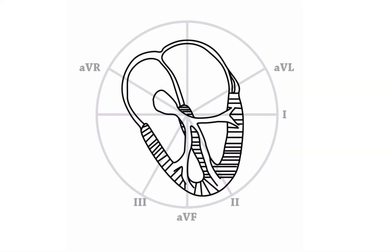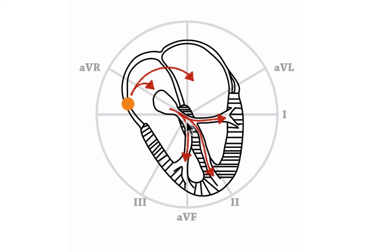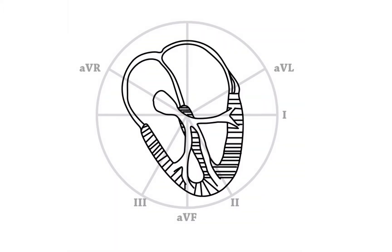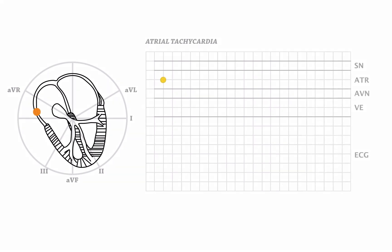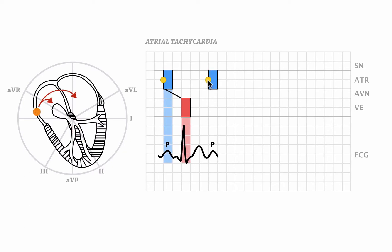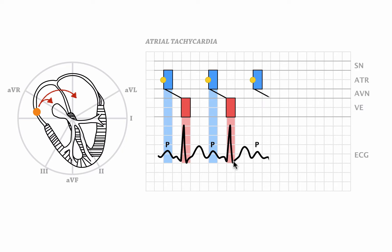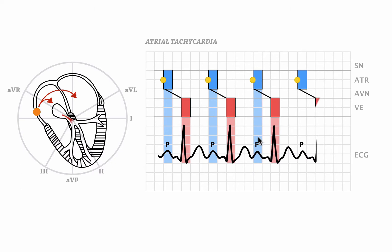In atrial tachycardia, an ectopic area within the atria takes over the pacemaker function and then depolarizes the atria, upon which the impulse travels down through the AV node, through the bundles, and into the ventricles. In the ladder diagram: the atrial focus discharges, depolarizes the atria, the impulse travels to the ventricles and depolarizes them — you see the QRS complex. The atrial focus discharges again, depolarizes the atria — P wave — travels down to the ventricles — QRS complex — and so forth.